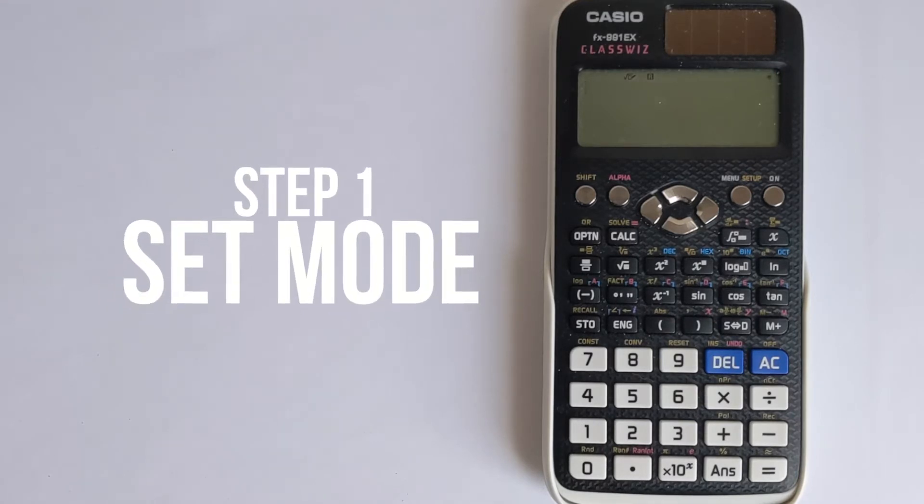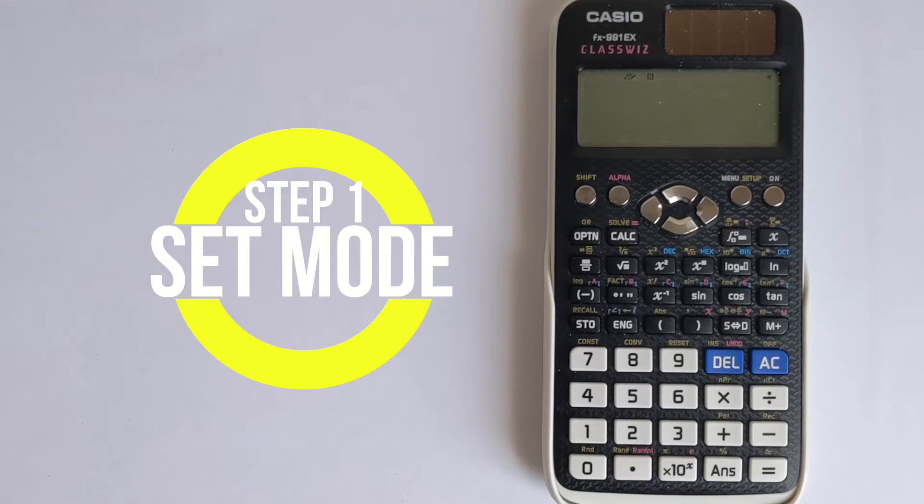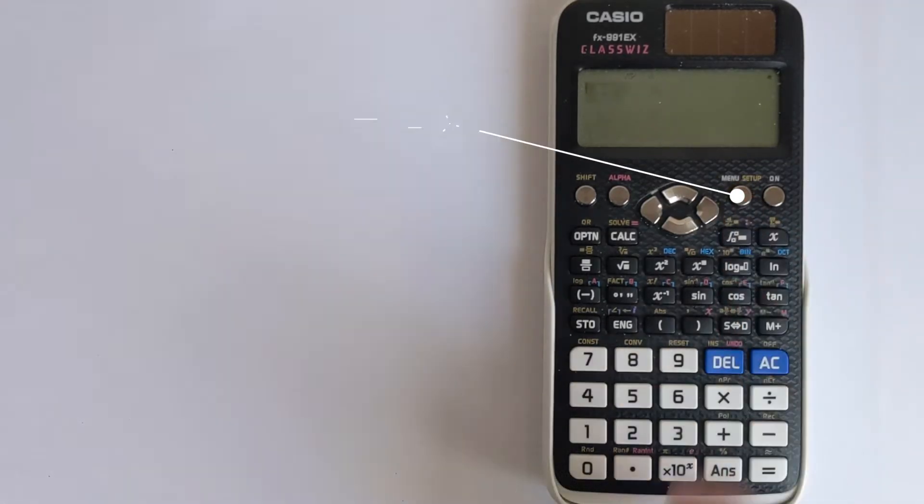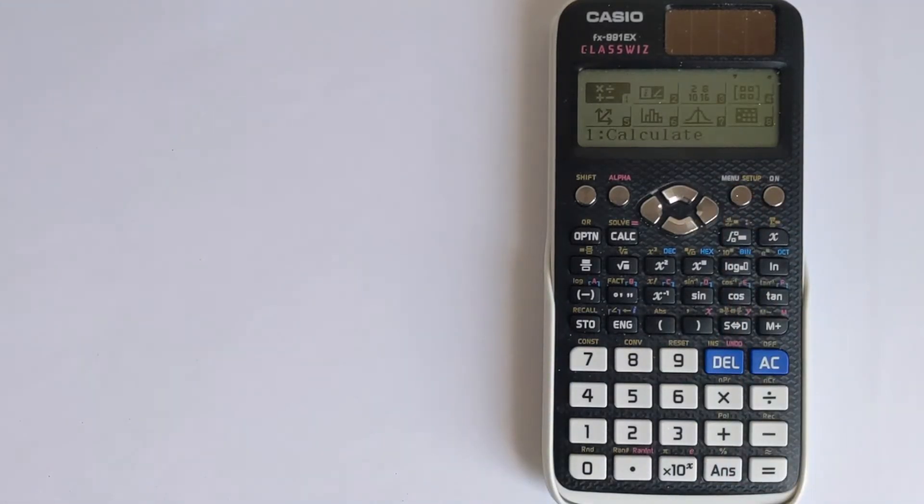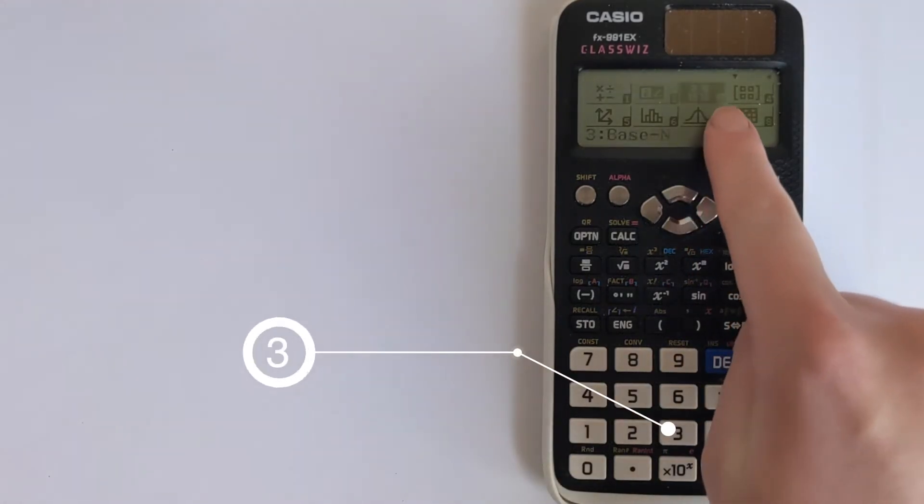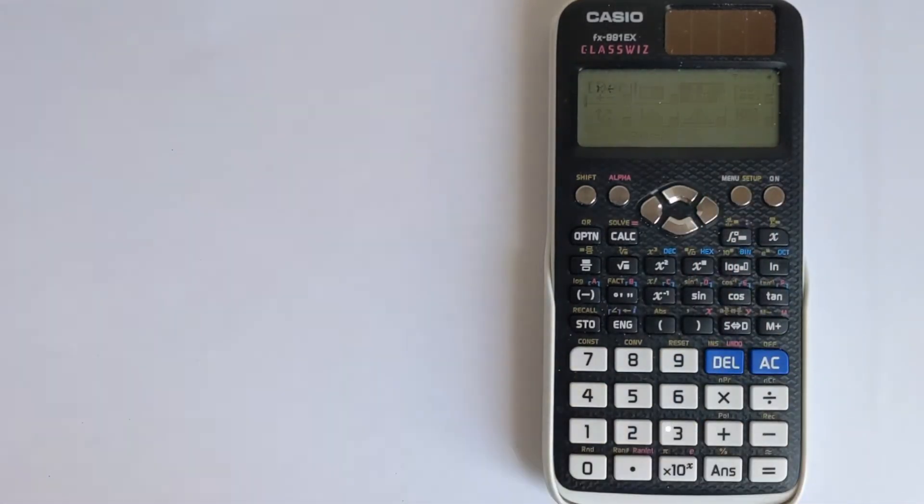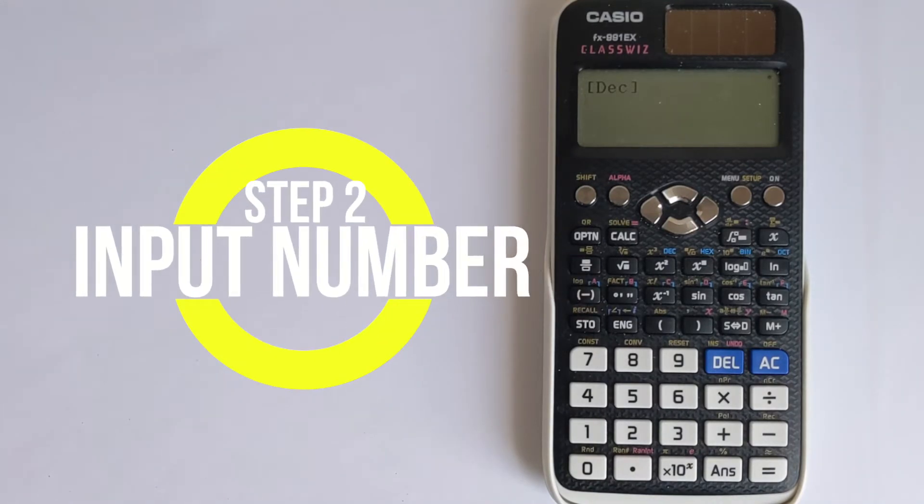To do this you need to first put your calculator into the correct mode. Press the menu button and then look at option three which is the base n mode. This now comes up with dec for decimal, which is expecting an input in decimal.